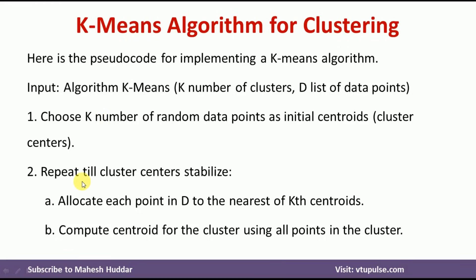The second step is repeated until the cluster centers stabilize. In the second step, we have two sub-steps. The first sub-step is to allocate each of the data points to the nearest Kth centroid — that is, we calculate the distance between the centroids and all the data points, find the nearest centroid for every data point, and then assign the data point to that nearest centroid.